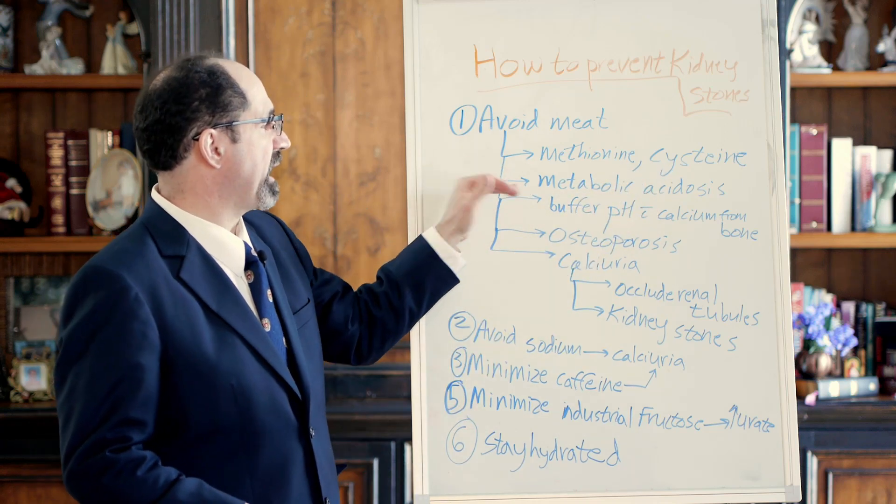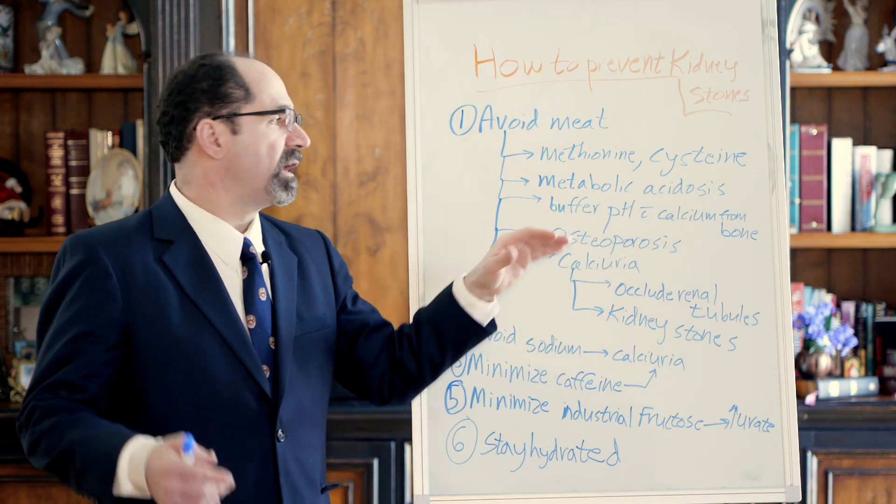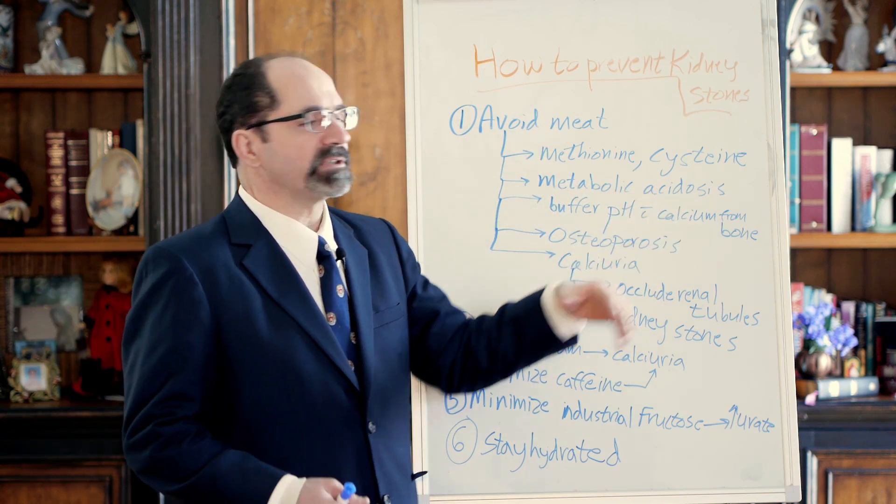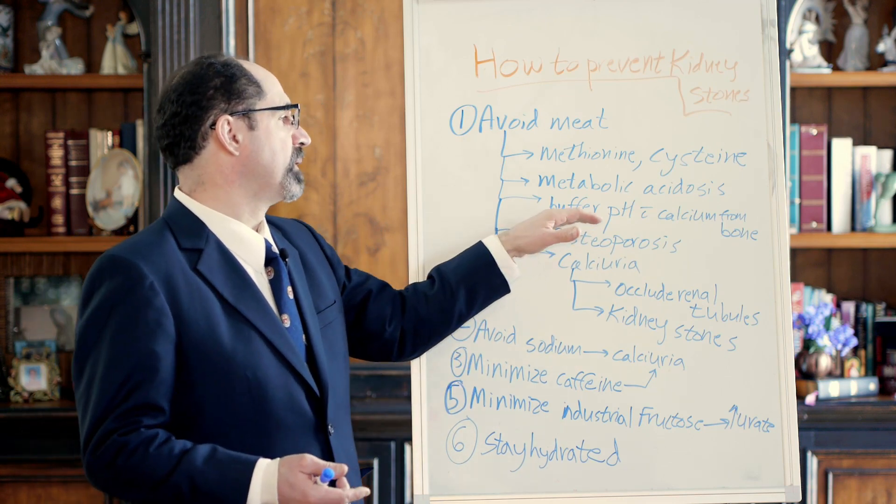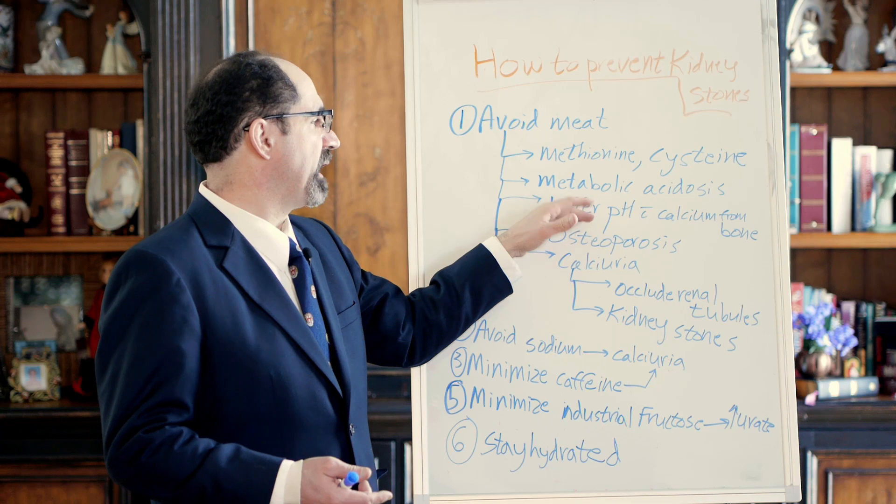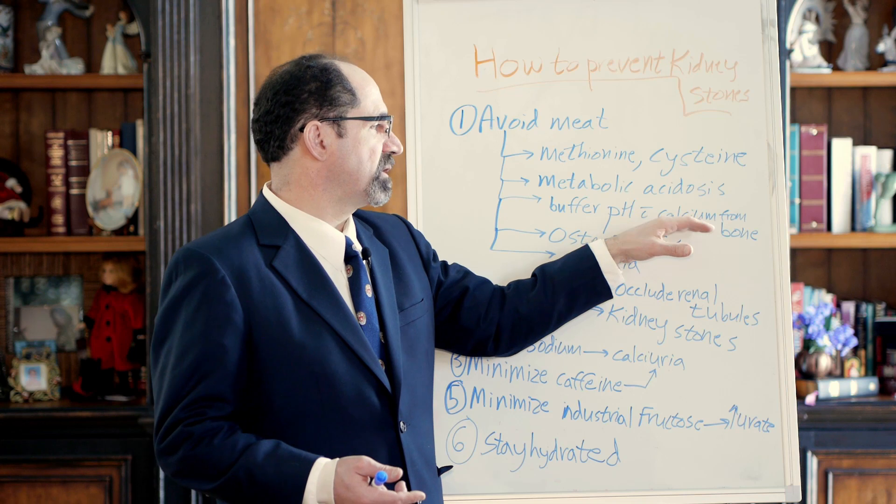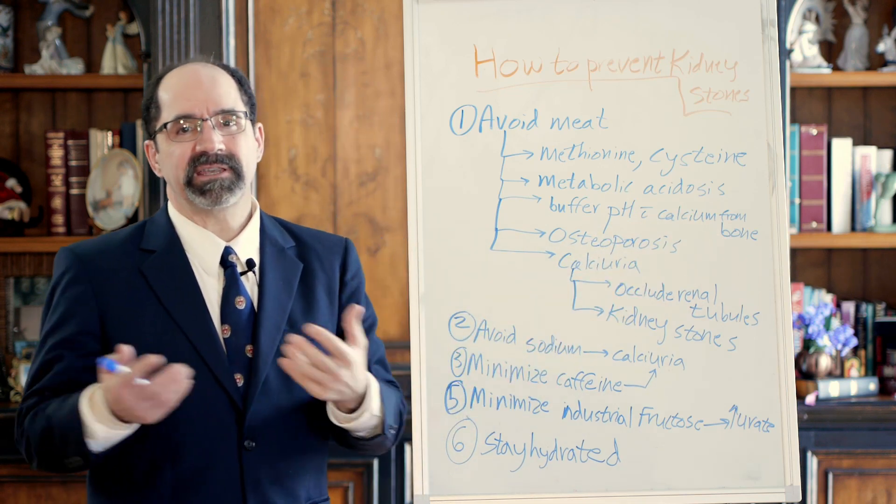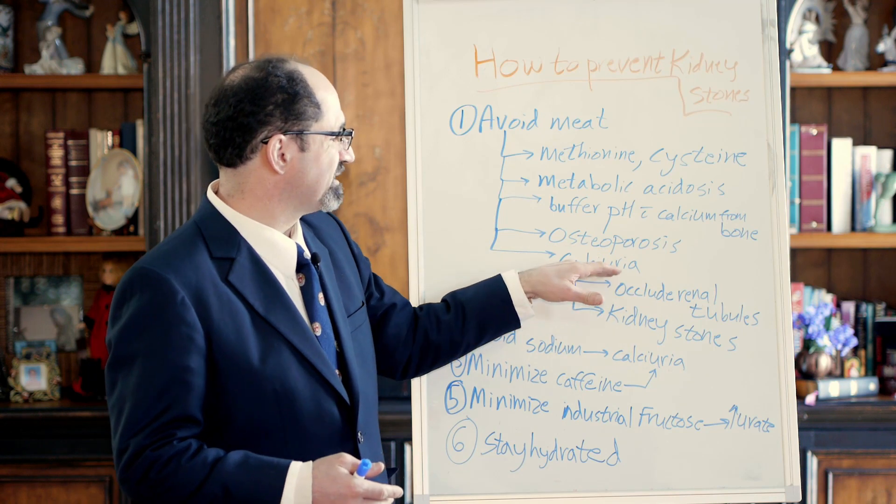In the process of their metabolism, their degradation, sometimes the sulfurs are pulled off and made into sulfuric acid and they'll cause a metabolic acidosis. The body has to maintain a normal pH of around 7.4, and in order to buffer that pH from the metabolic acidosis of the methionine and cysteine, it will take calcium from the bone. And as it takes calcium from the bone, this is then excreted through the kidneys and that causes calciuria.